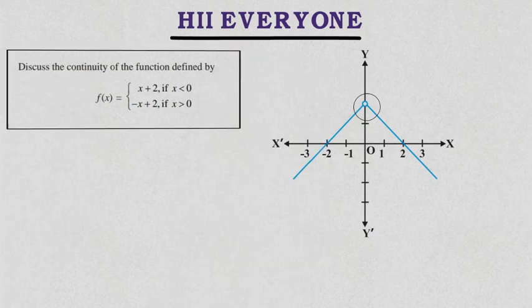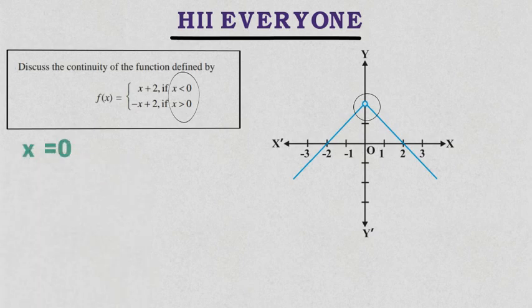But let's examine the question again. The condition is: f(x) = x + 2 if x < 0, and f(x) = -x + 2 if x > 0. This means that at x = 0 our function has no defined value. So x = 0 is not in the function's domain. We need to check whether x = 0 is a point of continuity or discontinuity.